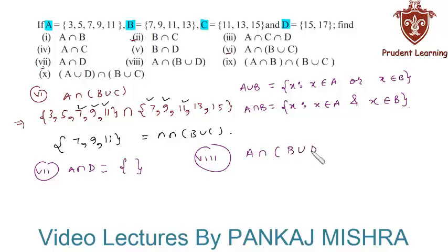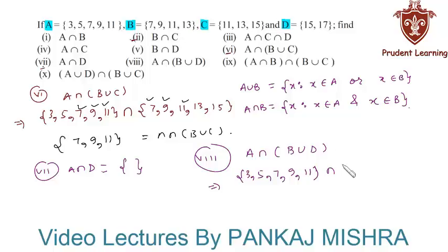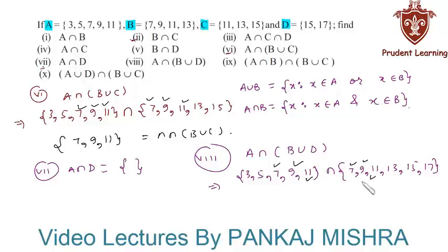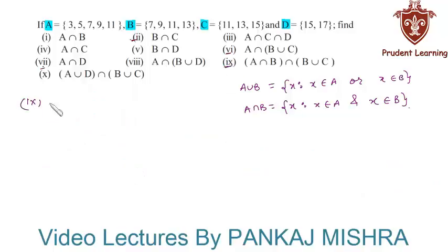Next we have A intersection (B union D). Set A is {3, 5, 7, 9, 11}. B union D means clubbing all elements of set B and set D, giving us {7, 9, 11, 13, 15, 17}. Here 7, 9, and 11 are common to both sets, so A intersection (B union D) = {7, 9, 11}.